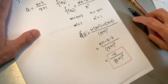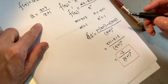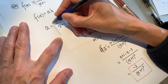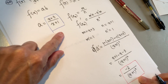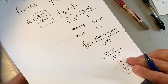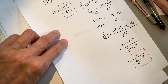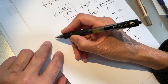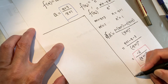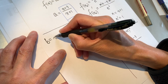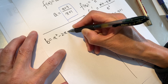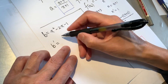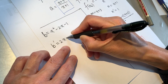Now we will find b. In a new piece of paper we write b and b prime. b equal to x squared minus 2x minus 1, so b prime equal to 2x minus 2.